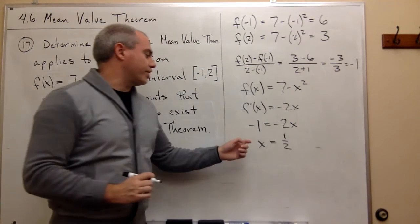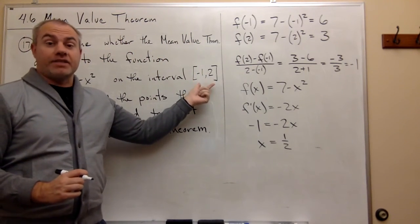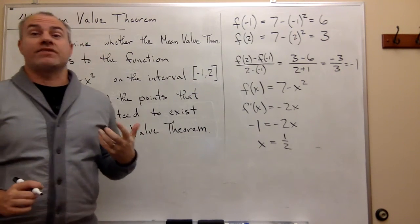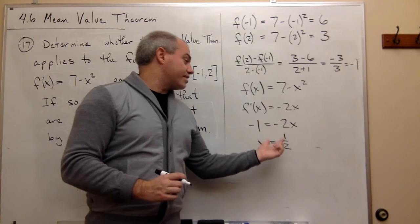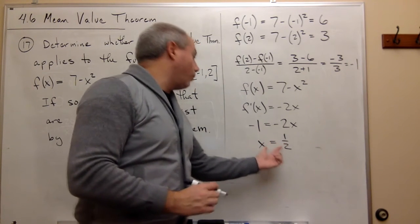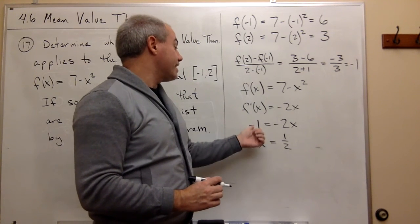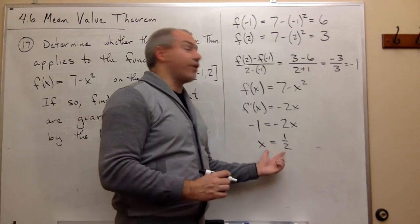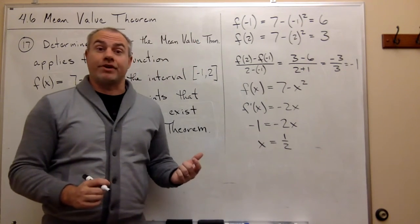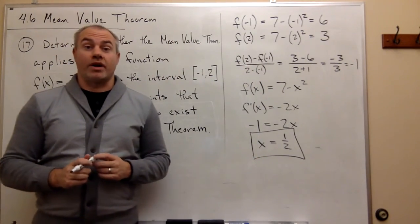Now, I should ask the question, is 1 half in my interval? Yeah, it's in between negative 1 and 2, so this makes sense for an answer. So this is a point x that's slope, the slope of this function at 1 half is negative 1. So this is the point guaranteed to me by the mean value theorem. So this is the answer that I'm looking for, is x is equal to 1 half.